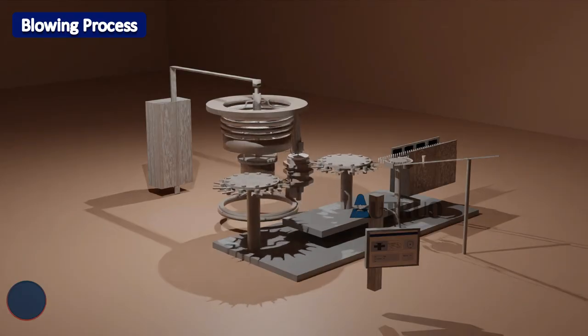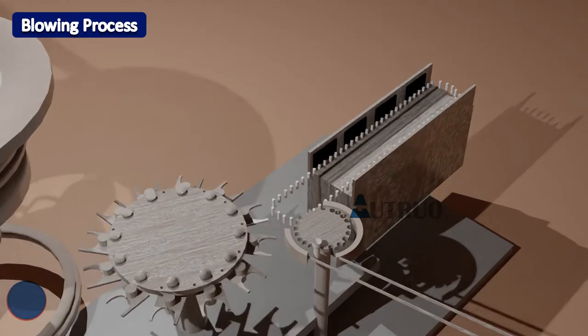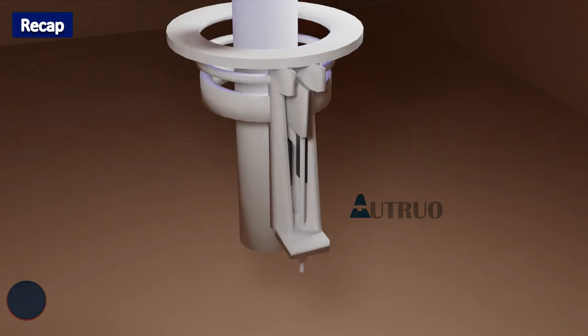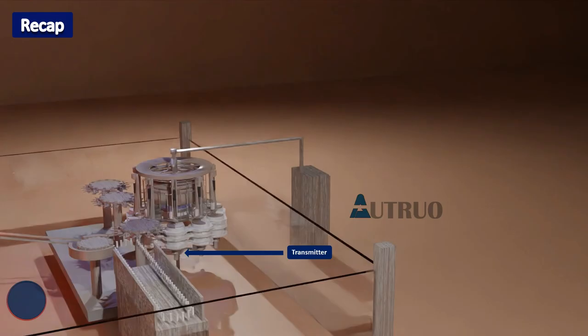Now let's do a quick recap. We started off looking at the three major processes that are involved in PET automation. We looked at how stretching process works. Finally, we ended off looking at how sensory technology and transmitters are used to monitor and control the machine. Hope you have learned something new today. See you in the next one.